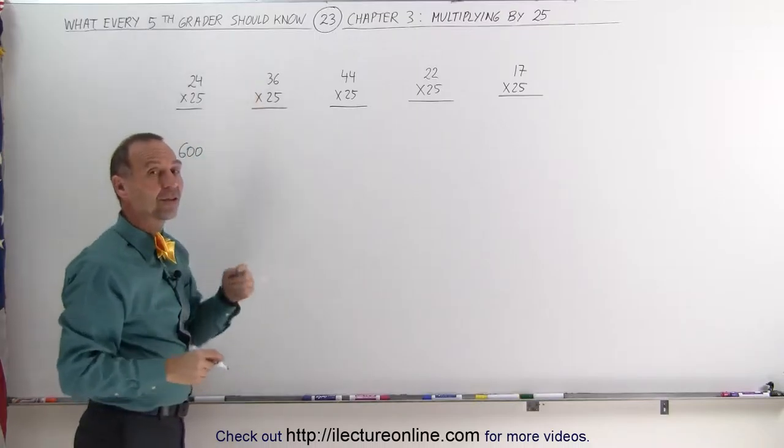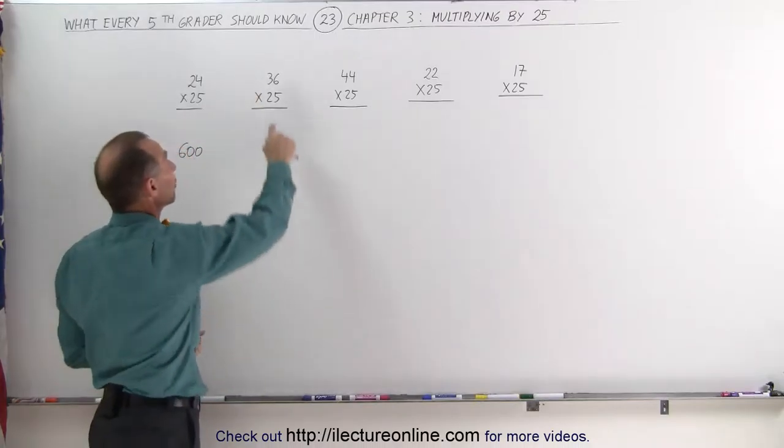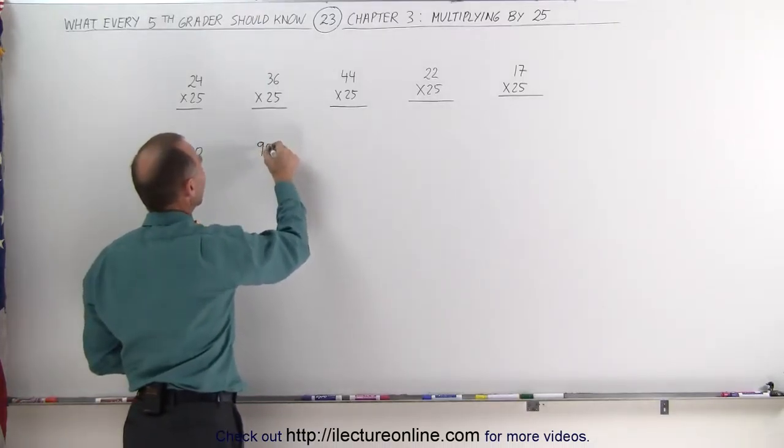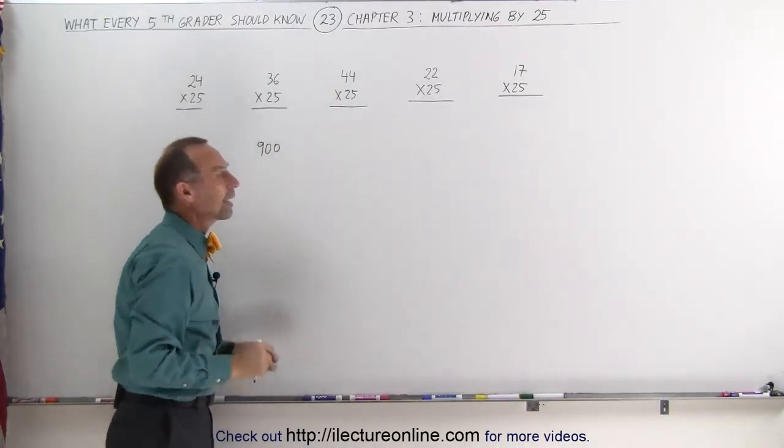Same with 36. 36 times 25, take the number 36 and divide it by 4, you get 9, add two zeros, you get 900.